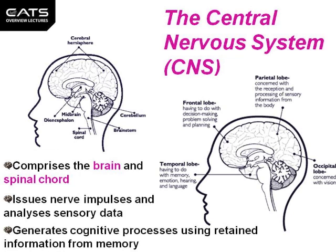The central nervous system comprises the brain and the spinal cord. It's responsible for issuing nerve impulses and the analysis of sensory data. It generates cognitive, that is thinking, processes using retained information from memory.